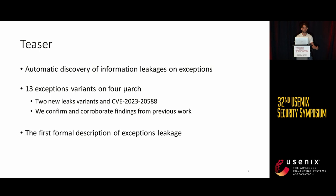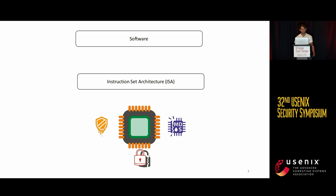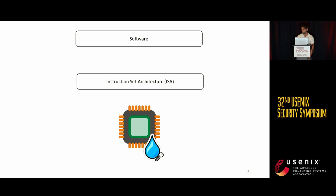We also introduced the first formal descriptions of leakage on exceptions. When we build software, we rely on the ISA, which hides implementation details of the CPU. The CPU contains speculative execution bugs enabled by exceptions, faults, or microcode assets — like Meltdown, Foreshadow, MDS, and more — and this leads to information leakage.